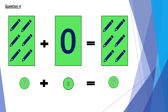Question 4. 6 pens plus 0 pens equals 6 pens. So anything plus 0 equals itself. So in the number form, 6 plus 0 equals 6.